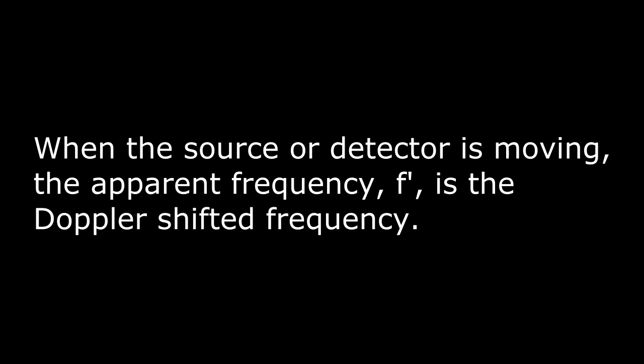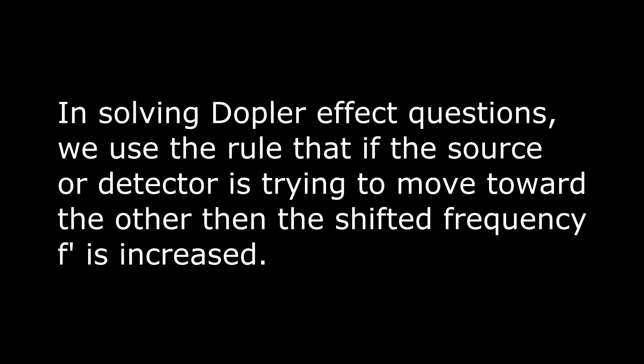The listener encounters fewer wave crests per second when moving away from the source. The shift occurs whether the source or the listener is moving. The listener is sometimes referred to as the detector. A stationary source emits a frequency f. When the source or detector is moving, the apparent frequency f prime is the Doppler shifted frequency. If the source or detector is trying to move toward the other, the shifted frequency f prime is increased.